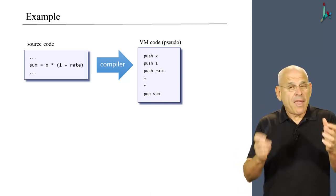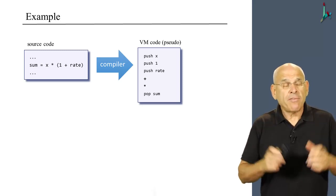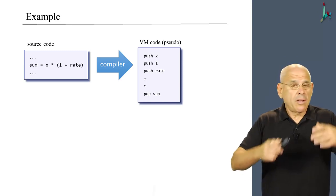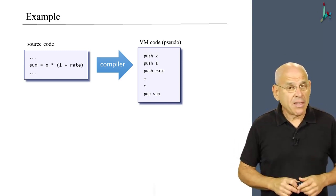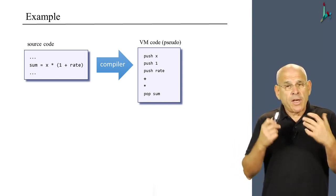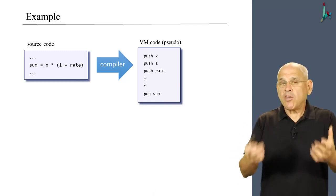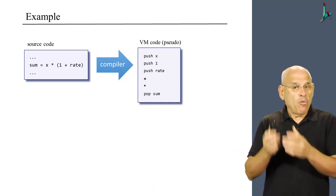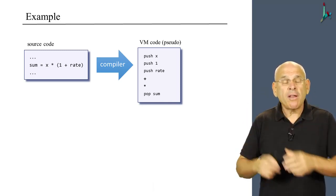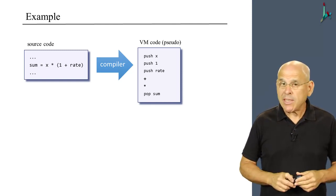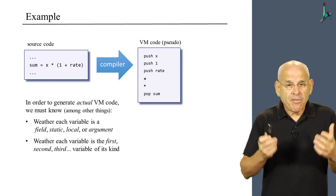Now remember that the VM language does not have symbolic variables. It only has things like local, argument, this, that, and so on. So in order to resolve this pseudocode into final executable VM code, I have to map these symbolic variables on what we call the virtual memory segments. So I need some information.